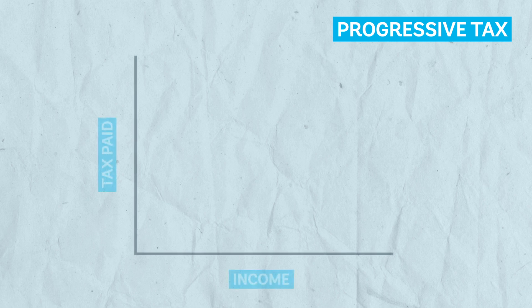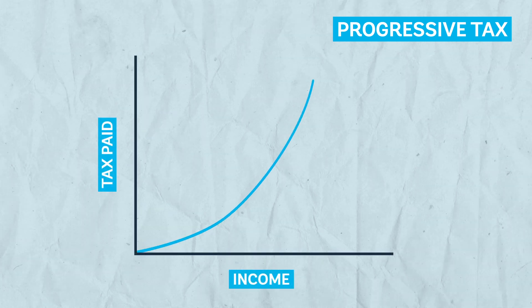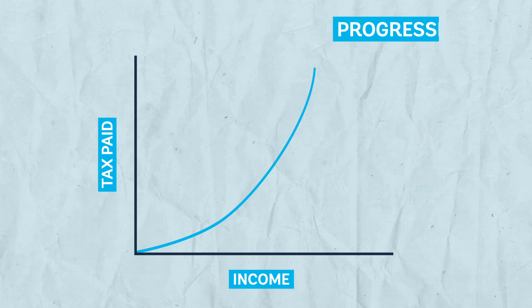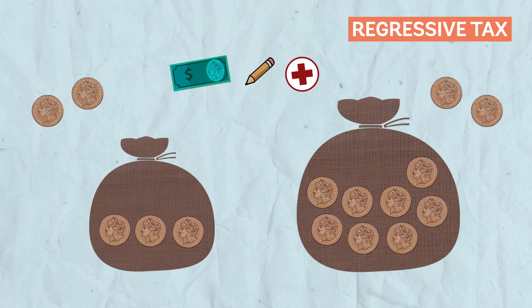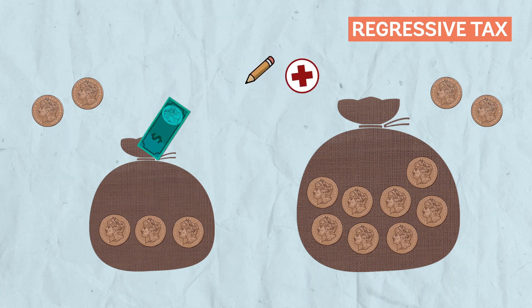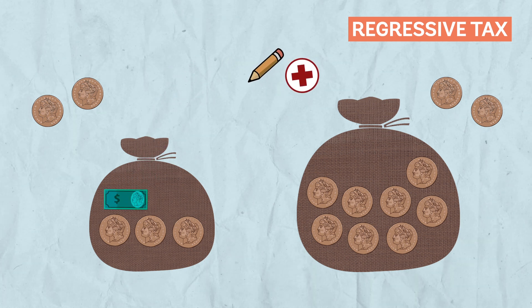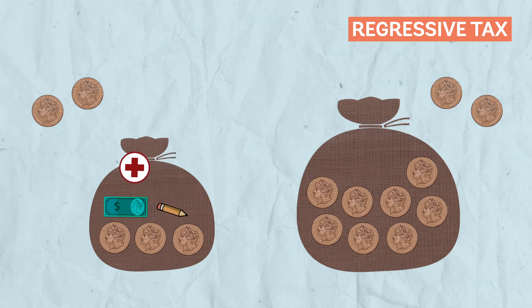A progressive tax reduces inequality as long as it collects a sizable amount of money. However, a regressive tax can also reduce inequality if the money collected is then mostly used to benefit the poor. For instance, an increase in value-added taxes on goods could be bad for the poor, but if the revenues are used to fund social transfers for the poor or construction of primary schools in poor areas, it can reduce inequality in the long run.